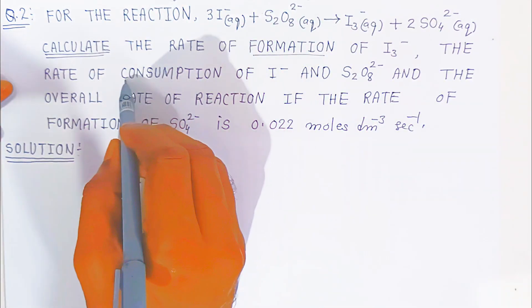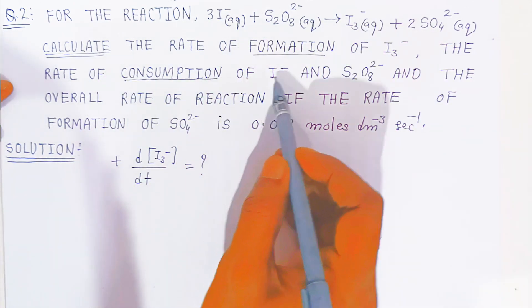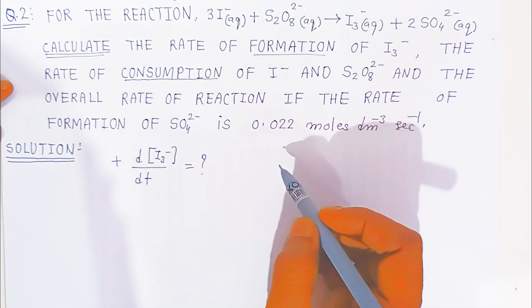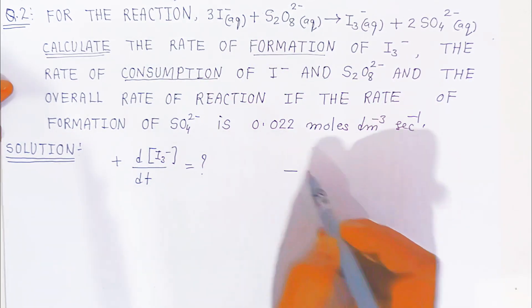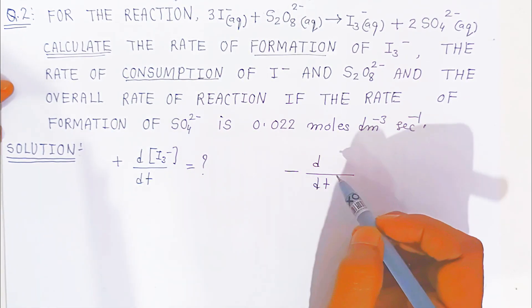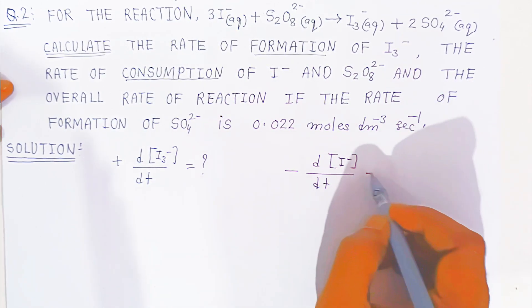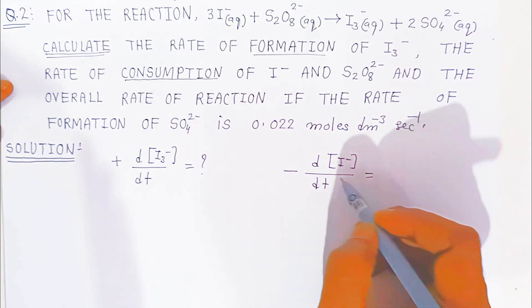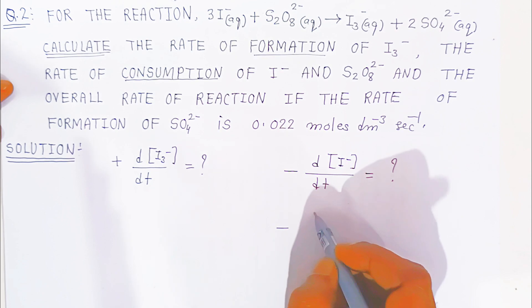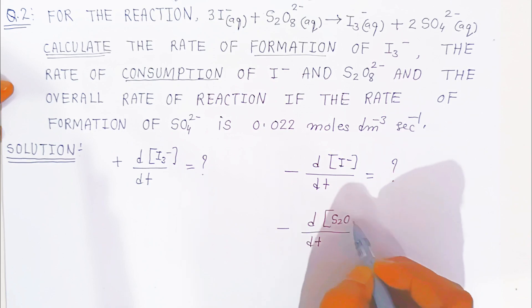And also the rate of consumption. Consumption is shown with a negative symbol. The rate of consumption of iodide and persulfate ions — we write this as −d/dt. What will be the rate of consumption of iodide students, and the rate of consumption of persulfate (S₂O₈²⁻)?